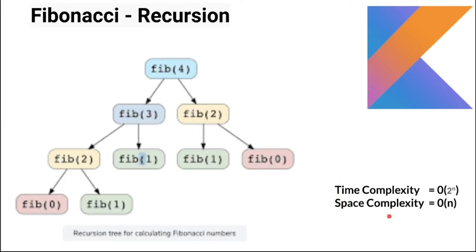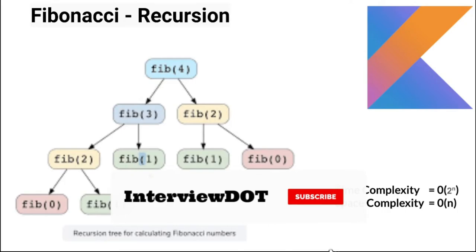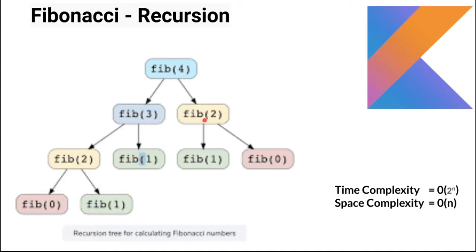That's why space complexity is O(n). And why is time complexity O(2^n)? Because you can see in this tree, there are some duplicates. For example, fib(1), fib(1), fib(1), these three are duplicates. And fib(2), fib(2) are duplicates. And fib(0) and fib(0) are duplicates. So there are a lot of duplicate calls whenever we calculate the Fibonacci value using recursion.